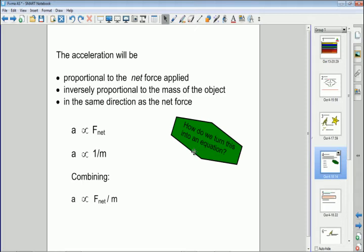And the acceleration will also be in the same direction as the net force. So if you've got more than one force acting, you have to work out the net force before you can work out what the acceleration is going to be. So mathematically then, the acceleration is proportional to the net force. It's inversely proportional to the mass or proportional to one over the mass. And you can combine these two proportionalities to get this expression here. The acceleration is proportional to the net force divided by the mass.